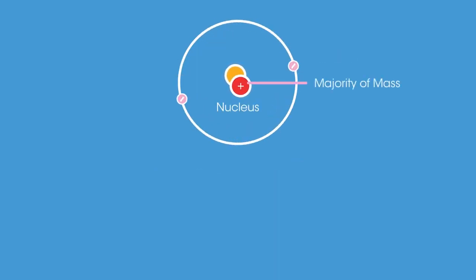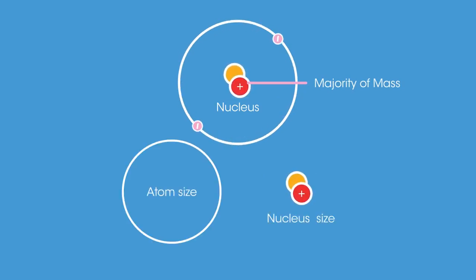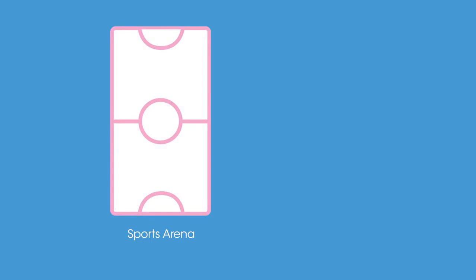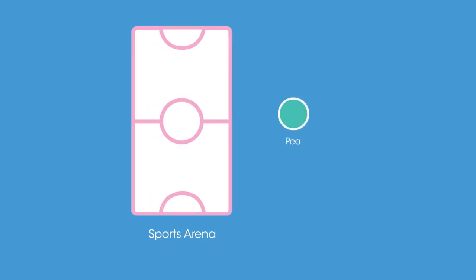The majority of the mass of an atom is contained in its nucleus, but in terms of size, the nucleus is much smaller than the atom as a whole. In fact, electrons can orbit really far away from the nucleus. If the atom was the size of a sports arena, the nucleus could be the size of a pea in the middle.